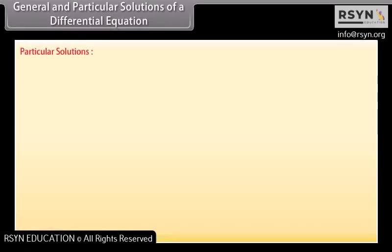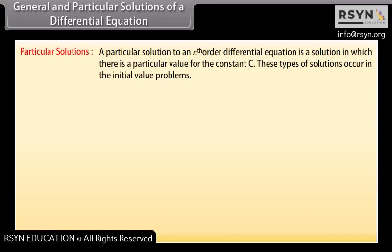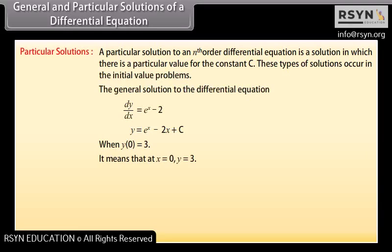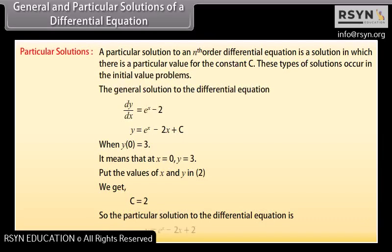Particular solutions: a particular solution is one in which there is a particular value for the constant c; these occur in initial value problems. Given the general solution y = e^x − 2x + c, when y(0) = 3, substituting x = 0 and y = 3 into equation 2 gives c = 2. So the particular solution is y = e^x − 2x + 2.